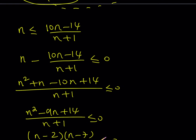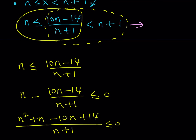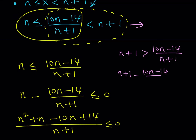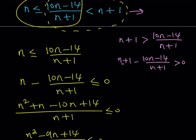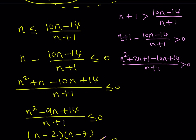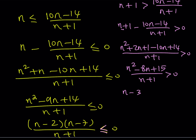Now let's solve the second inequality: (10n − 14) / (n + 1) < n + 1. Bringing everything to one side: (n + 1) − (10n − 14) / (n + 1) > 0. Making a common denominator gives [(n + 1)² − (10n − 14)] / (n + 1) > 0, which expands to (n² + 2n + 1 − 10n + 14) / (n + 1) > 0. Simplifying the numerator gives (n² − 8n + 15) / (n + 1) > 0, which factors as (n − 3)(n − 5) / (n + 1) > 0.